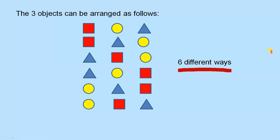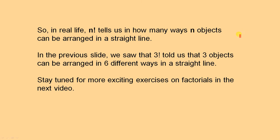There is one example of how we can use factorial in real life. In real life, n factorial tells us in how many ways n objects can be arranged in a straight line. In the previous slide, we saw that 3 factorial told us that 3 objects can be arranged in 6 different ways in a straight line.